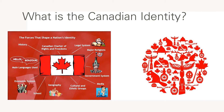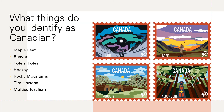What is the Canadian identity? What images come to your mind when you think about Canada? Some things that might come to your mind are the maple leaf, beaver, totem poles, hockey, Rocky Mountains, Tim Hortons, and multiculturalism. At this point you can brainstorm yourself what things represent Canada to you.